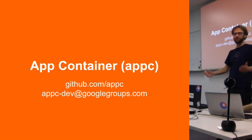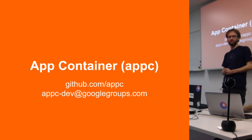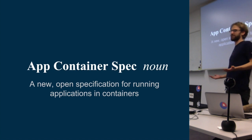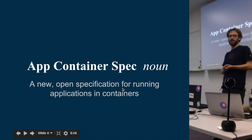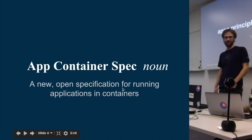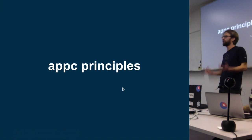So first we're going to talk about the App Container, which is a project and an organization on GitHub — that's the mailing list to discuss things App Container related. So what is the App Container spec? It's a new open specification that we're proposing and developing in the open for running applications in containers. I'll go into more about what's guided us as to why we've developed this new spec and what's very important to us.